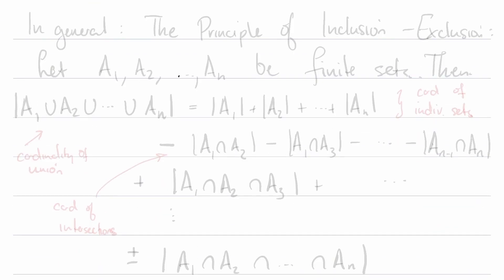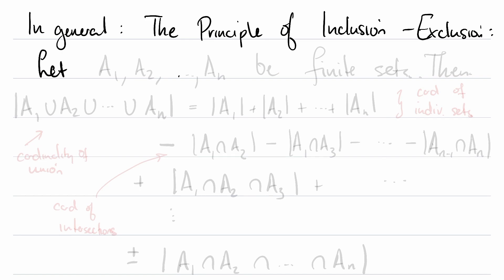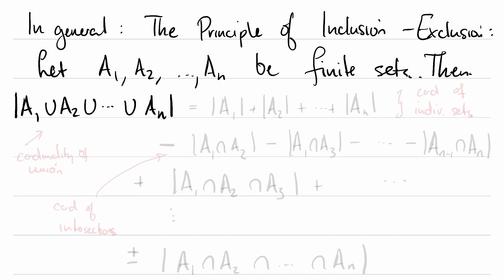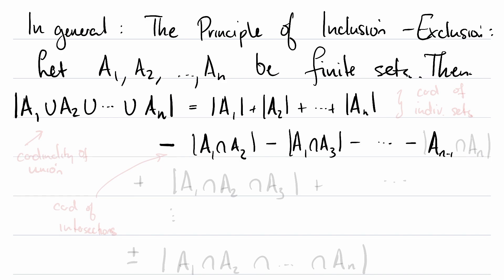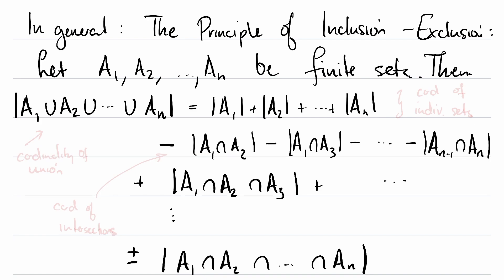In general, the principle of inclusion-exclusion looks like this. Start with a collection of finite sets, and the principle of inclusion-exclusion tells you a way of calculating the cardinality of their union. The cardinality of the union is going to be the sum of the cardinalities of the individual sets, minus the cardinalities of the pairwise intersections, then add the intersections of collections of three sets. You continue including and excluding in this way until at the very end it's either plus or minus the intersection of all your sets, depending on whether n is odd or even.